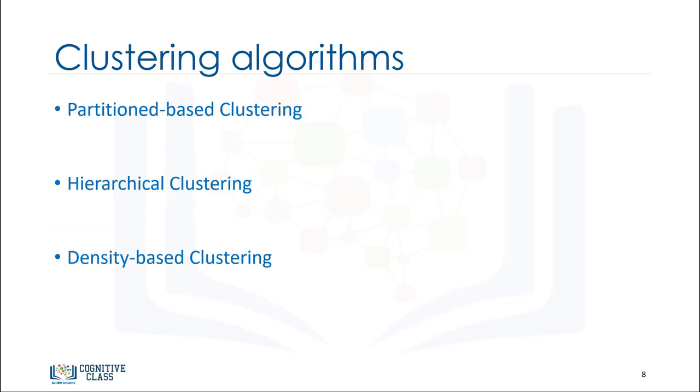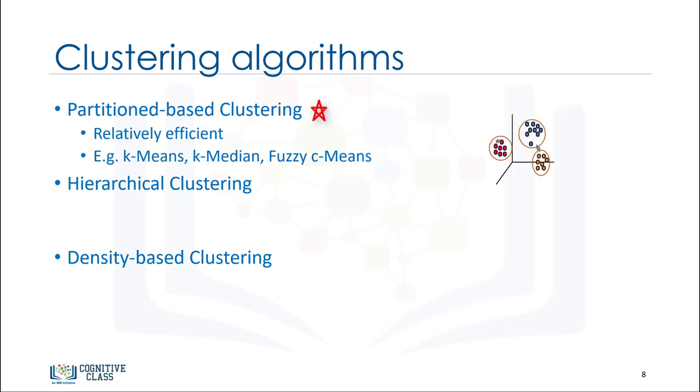Let's briefly look at different clustering algorithms and their characteristics. Partition-based clustering is a group of clustering algorithms that produces sphere-like clusters, such as k-means, k-median, or fuzzy c-means. These algorithms are relatively efficient and are used for medium and large-sized databases.